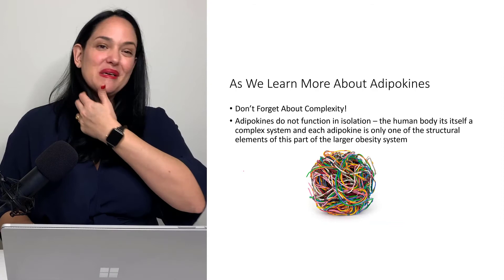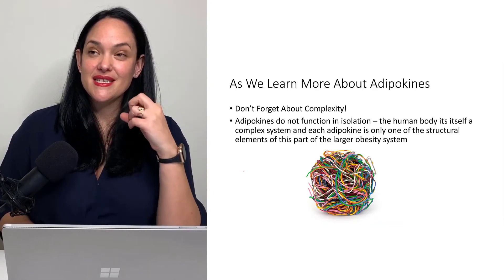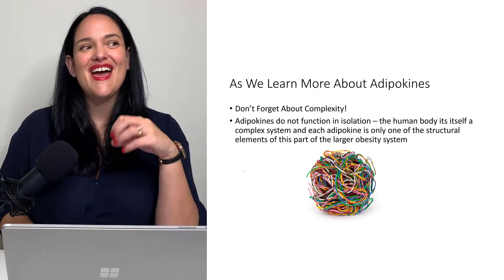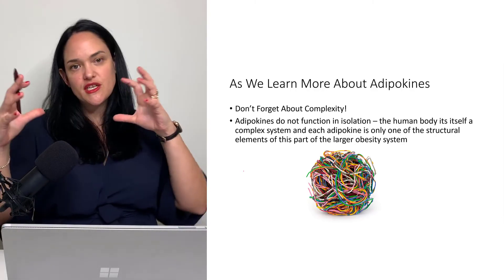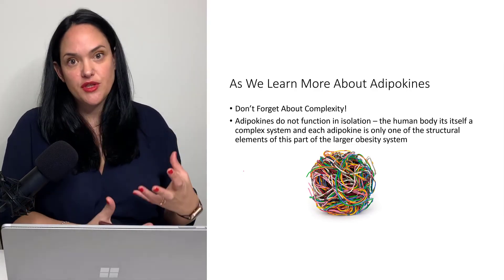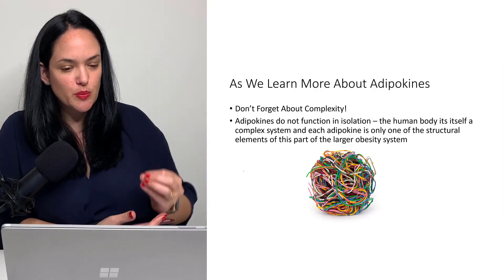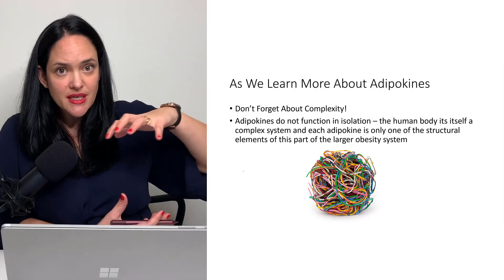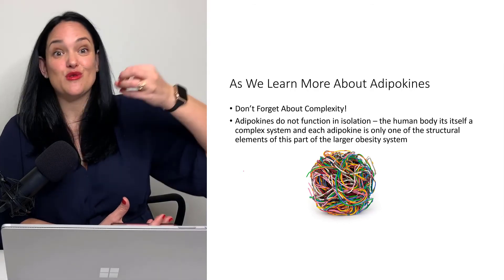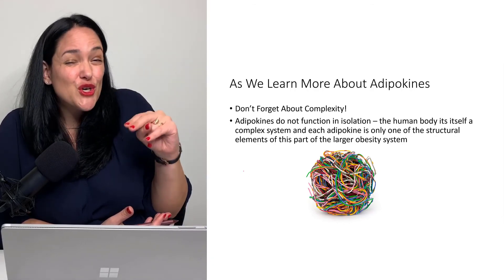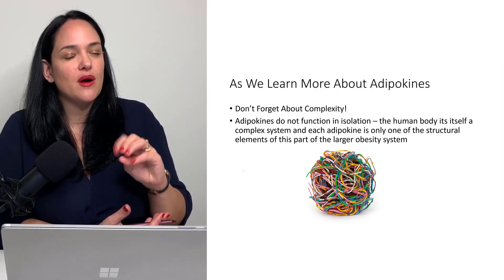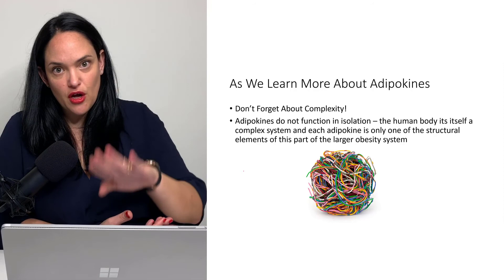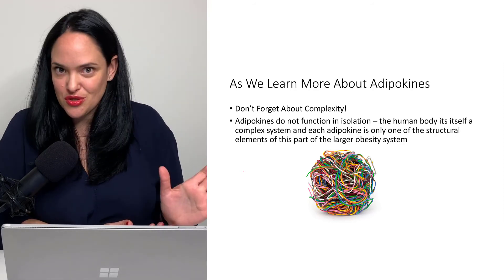As we learn about these adipokines, what's really important is to not forget about complexity. It's easy to think that when leptin secretion changes it has these effects, therefore leptin is a solution for everything — but it's all complex. There are so many different factors interacting within the body and with different tissues. We can't reduce obesity to one adipokine or one dysfunction. There is a complex interaction between adipokines, between adipose tissue and other tissues. No single adipokine is responsible for the pathology we see with obesity, and no single adipokine is the solution to obesity either.